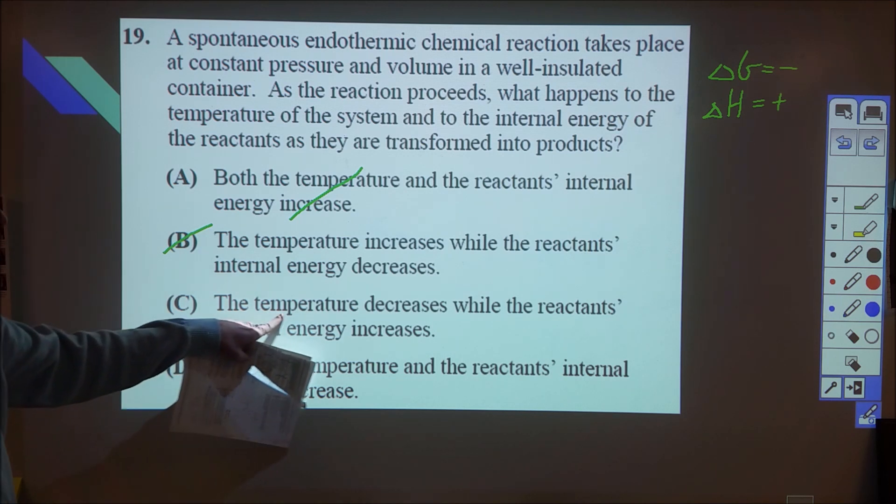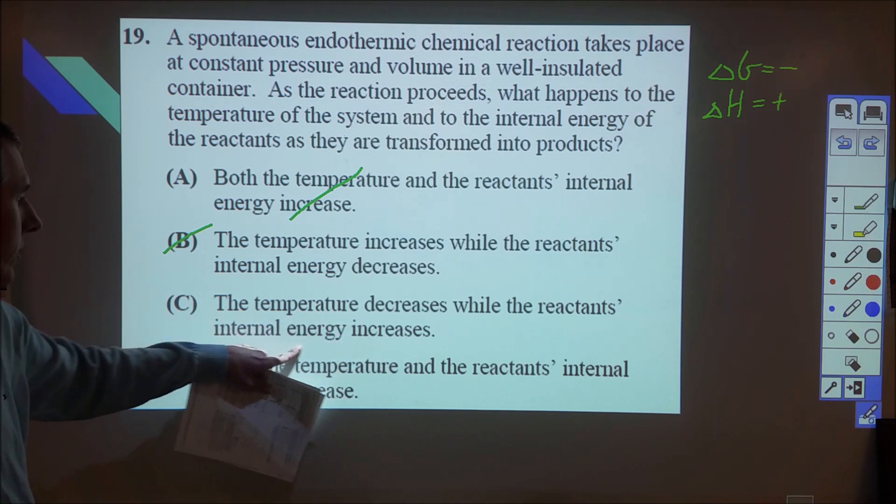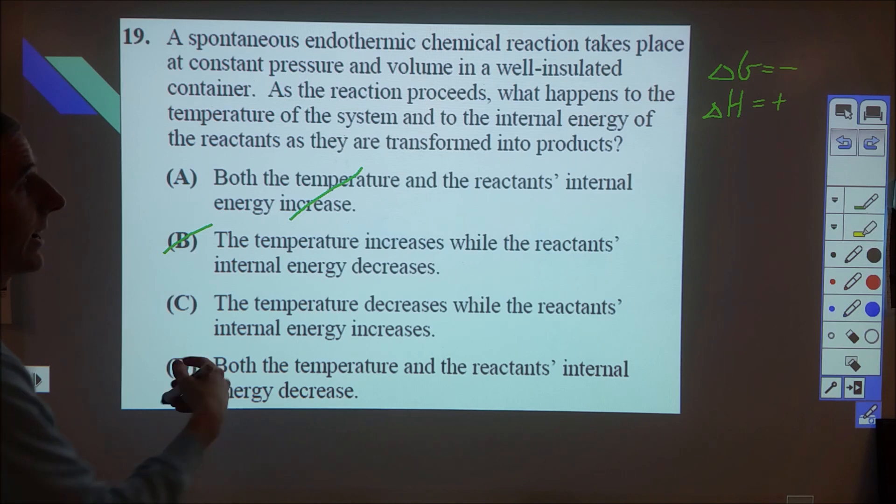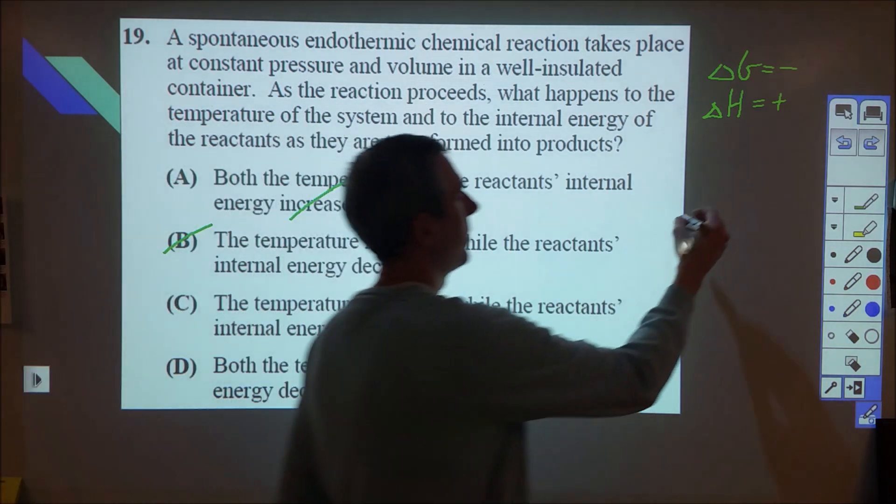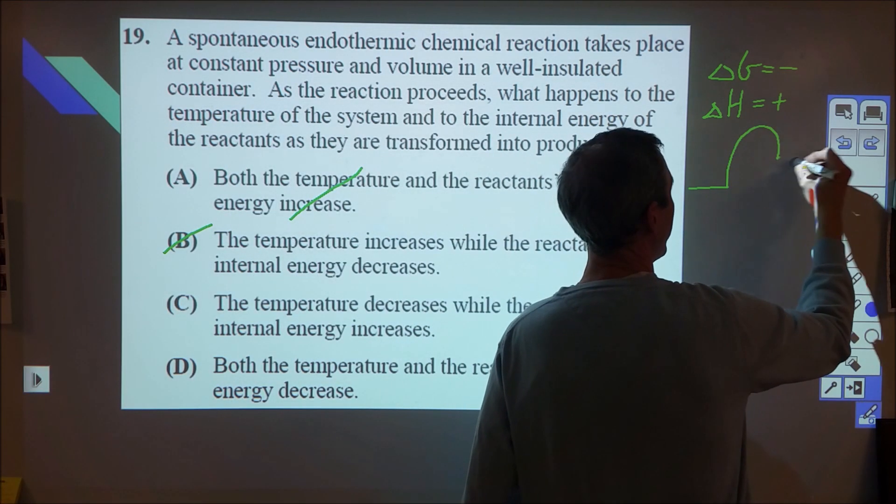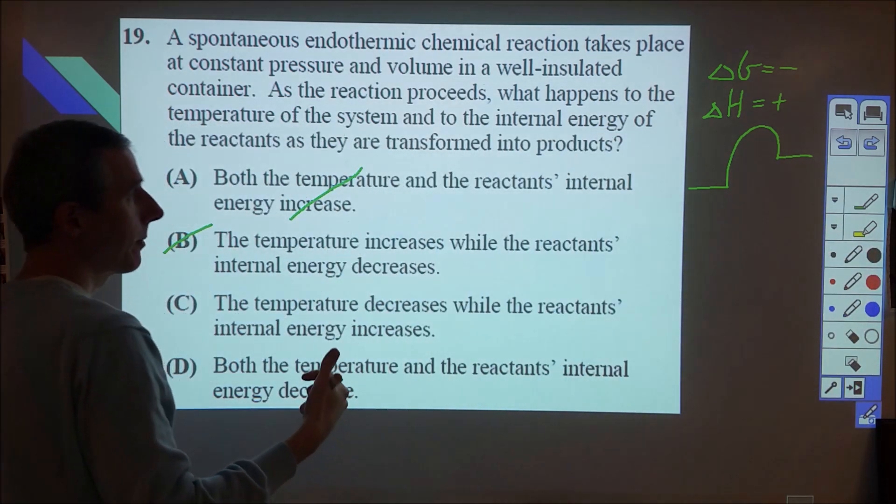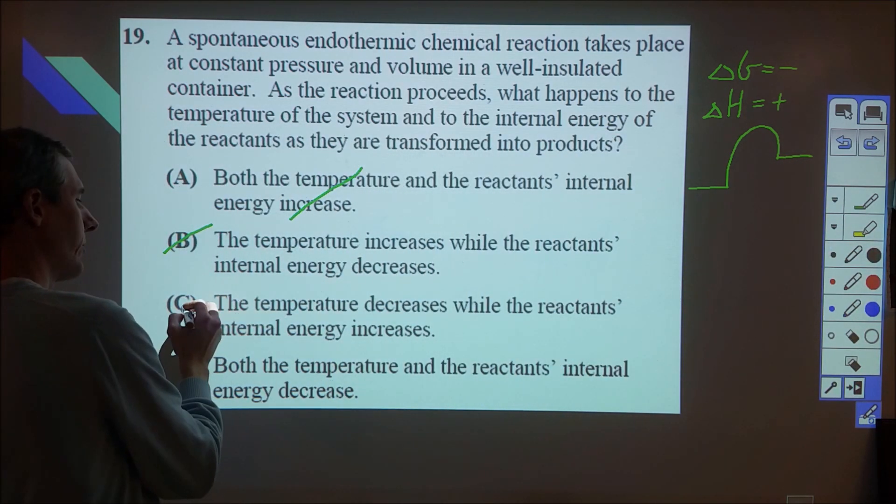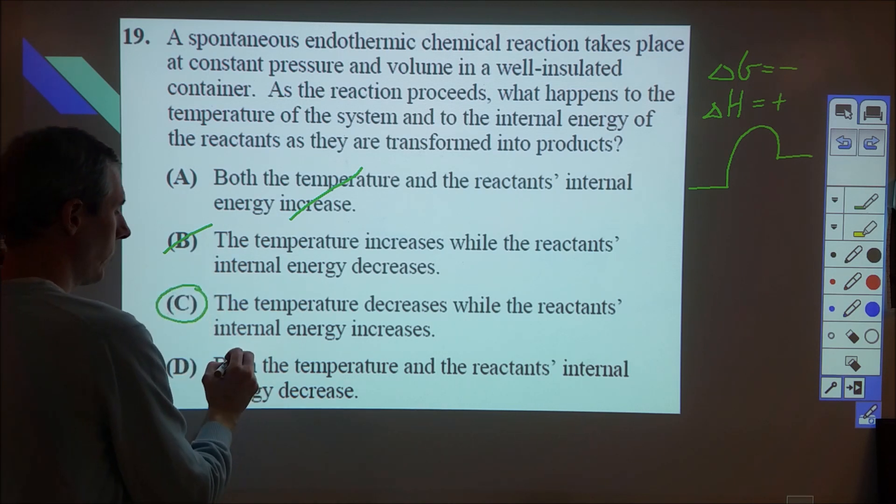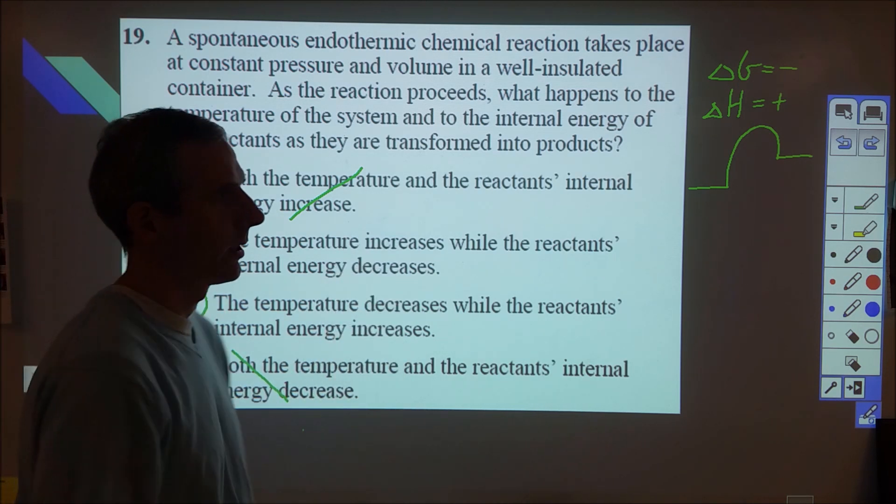Here when we have both the temperature and something else increase, that's incorrect. Temperature increases – that's incorrect. So we're looking between C and D. The temperature decreases while the reactant's internal energy increases. As the reaction happens, think of it like an endothermic reaction: the internal energy of that chemical is going up, the chemical energy is going up, so C would be our best option. We would not want the one where the internal energy decreases.